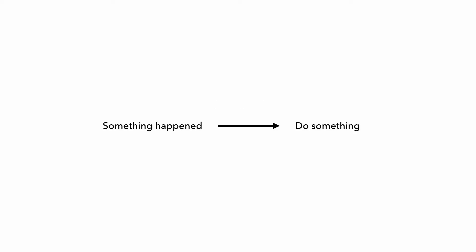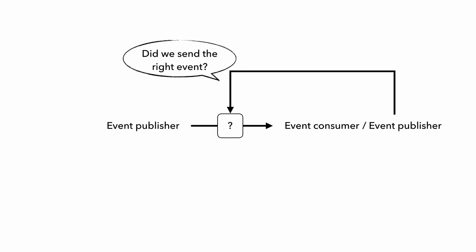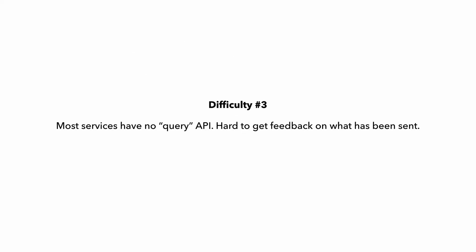Another thing that makes event-driven architectures difficult to test is that everything is asynchronous. When we do something in reaction to an event, that action is asynchronous. So as a tester and an observer, how do I know when that something has been done? I can wait, but how long should I wait before I'm sure it has failed? And when testing an event publisher, how can we verify it sent the right event with the right data payload? Most messaging services don't have a query API — you can't just ask EventBridge or SNS for all events published in the last five seconds. So it's hard to get that feedback loop in our tests.